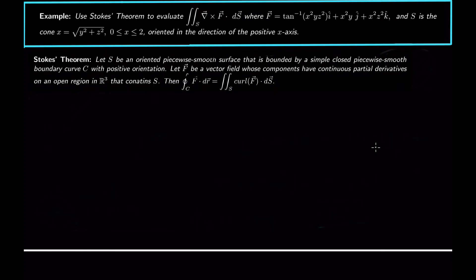Stokes' theorem says: let S be an oriented piecewise smooth surface that is bounded by a simple closed piecewise smooth boundary curve C with positive orientation based on the orientation of S. So the orientation of S determines what positive orientation really means. Positive orientation means walk counterclockwise along the curve and the surface should be to the left. Then let F be a vector field whose components have continuous partial derivatives on an open region in R3 that contains S. Then the line integral of C, F·dr, is equal to the surface integral of the curl of F·dS. So the surface integral of the curl can be simplified to a line integral, or a nasty line integral over multiple curves can be simplified to just a surface integral over the surface bounded by that curve.